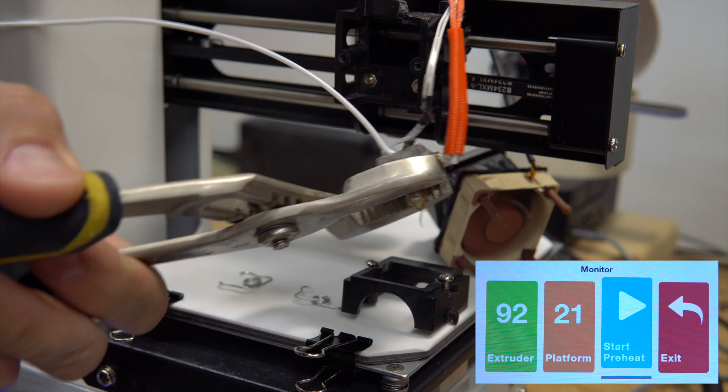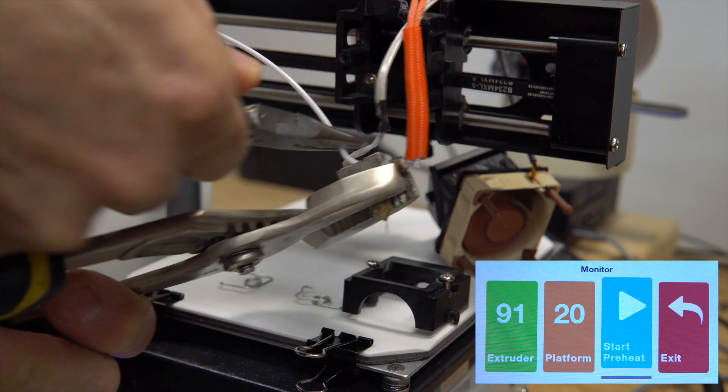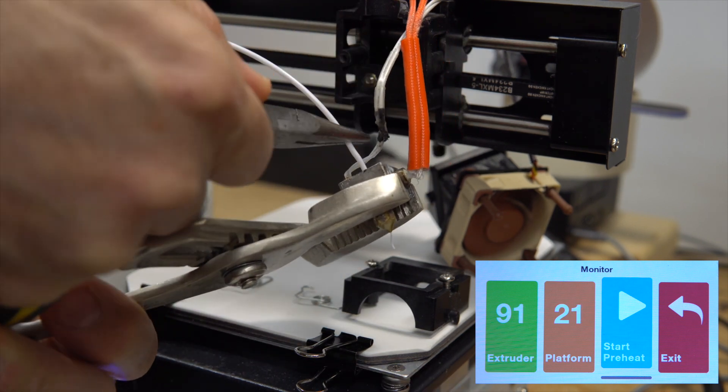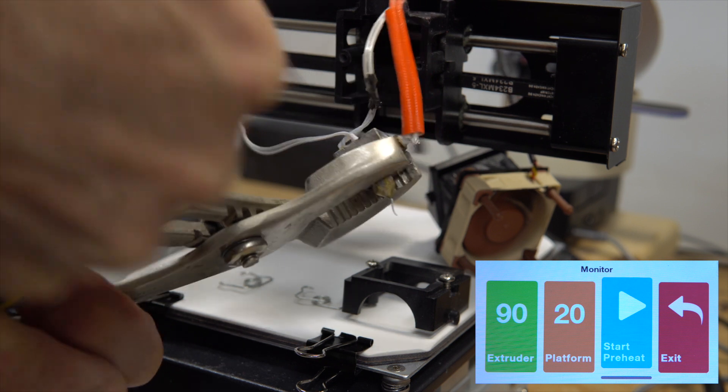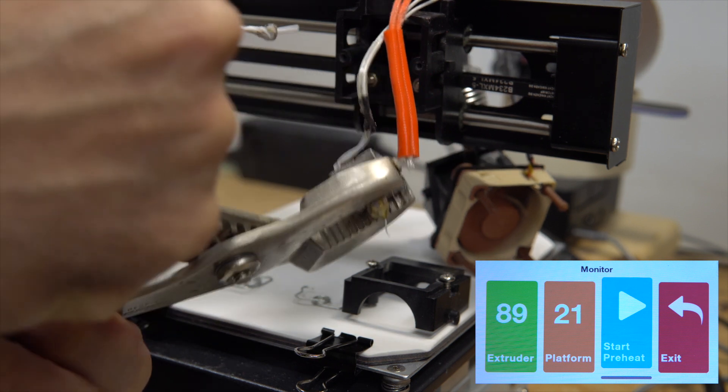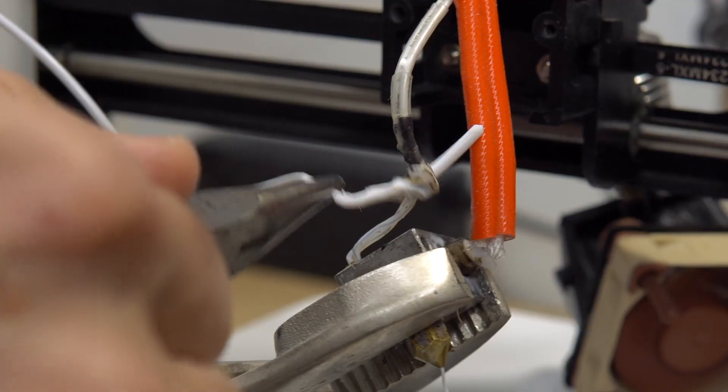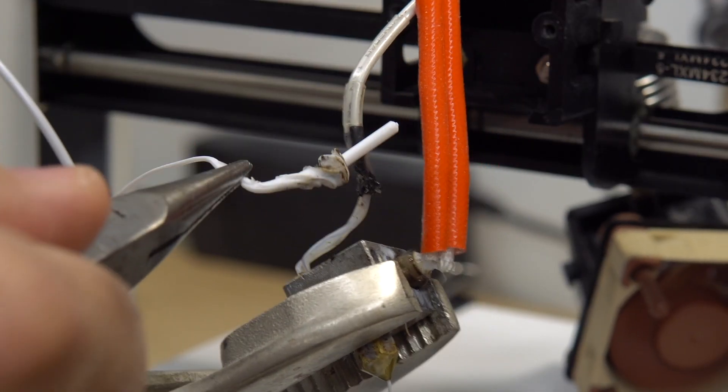Then I take a plier and remove the filament at around 90 degrees to clear up the jam. You may need to do this more than one time, but this time it's good.